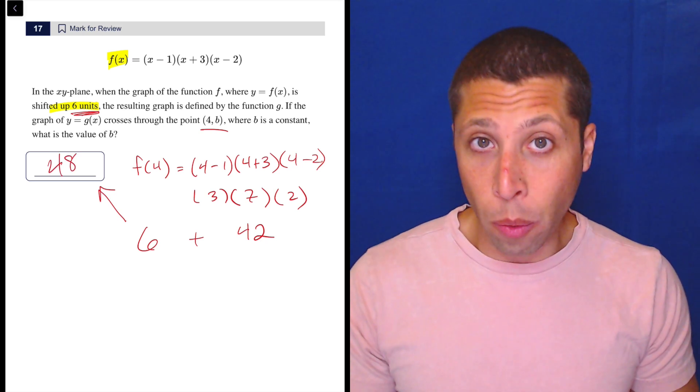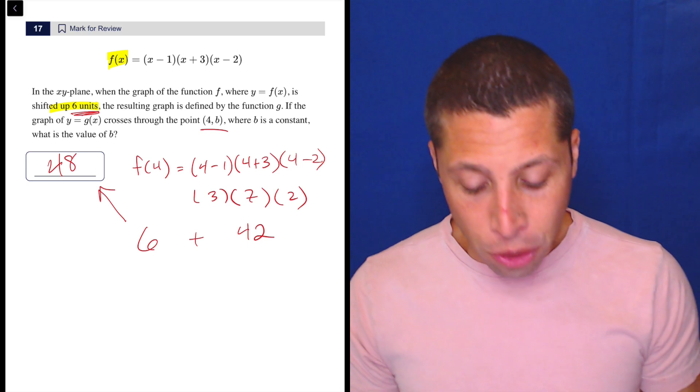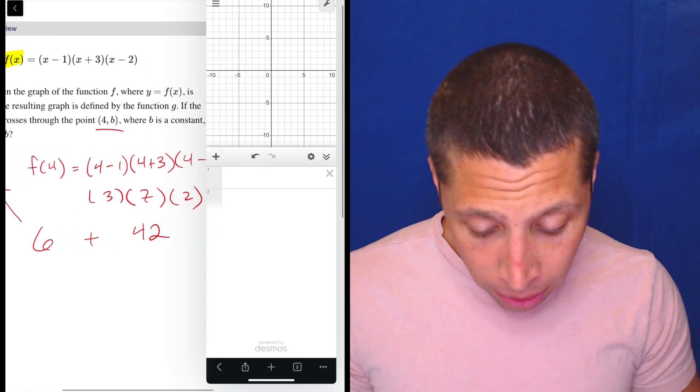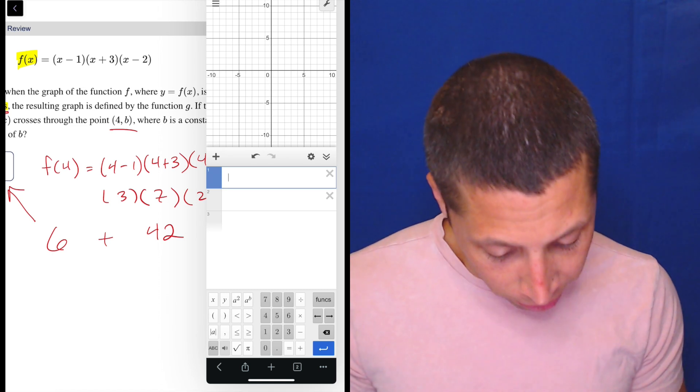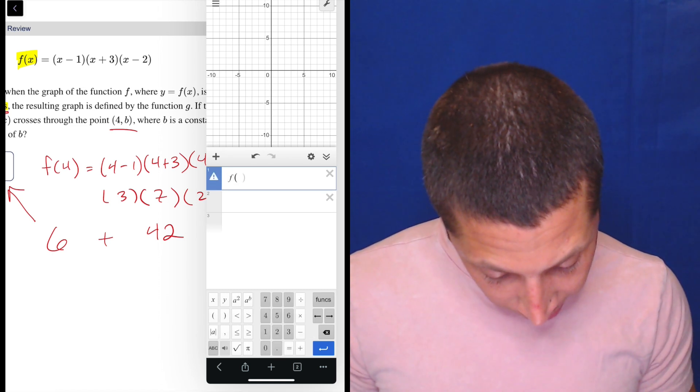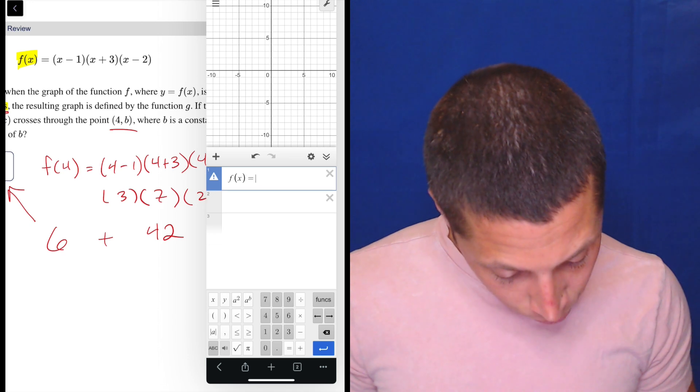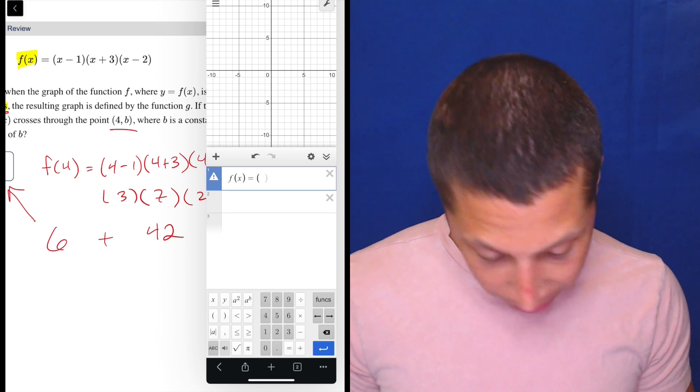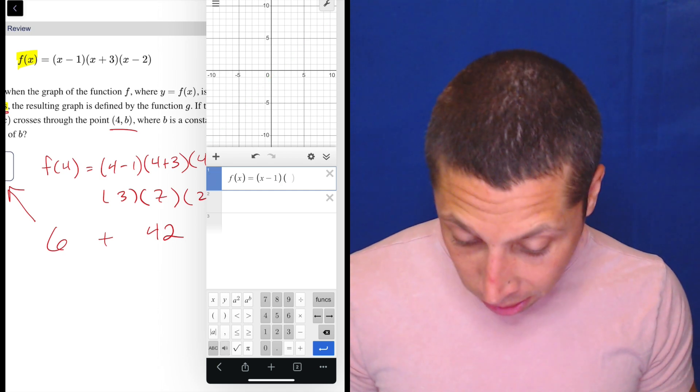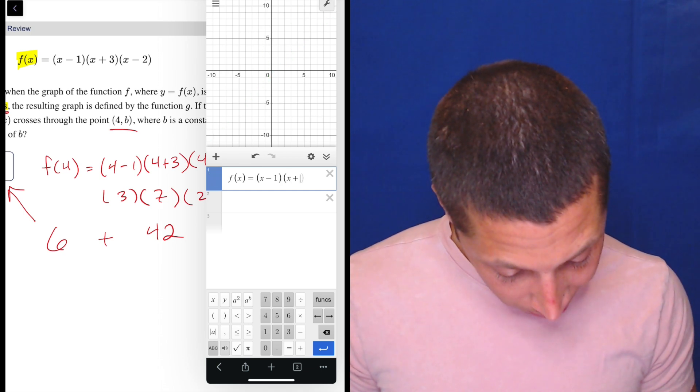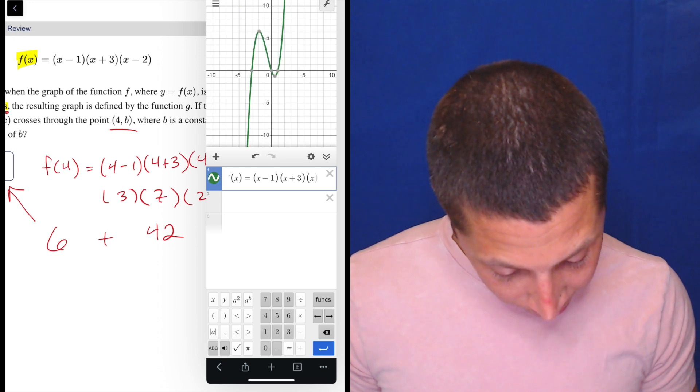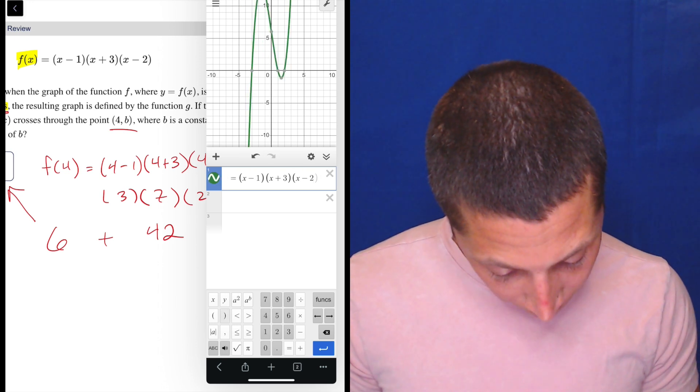Let me show you what's going on though. There's a couple other ways to do it. One is we can take this exact graph and we can put it on our Desmos, right? So let's just do f(x) is equal to, and we've got to make sure we have all these parentheses. So (x-1)(x+3)(x+3)(x-2)(x-2). Okay. So there you go. You get a little kind of squiggly thing.